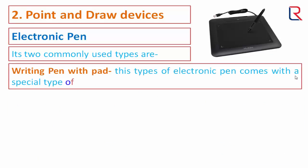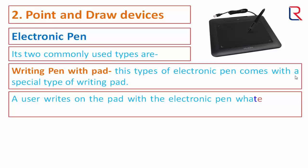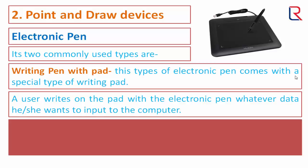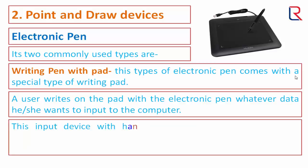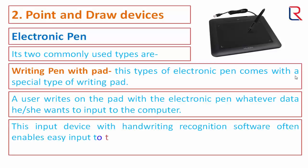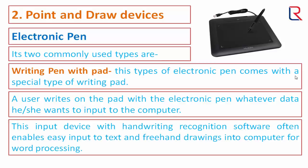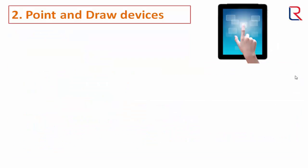Writing pen with pad: this type of electronic pen comes with a special writing pad. A user writes on the pad with the electronic pen, whatever data they want to input to the computer. This input device, combined with handwriting recognition software, often enables easy input of text and freehand drawings into a computer for word processing.